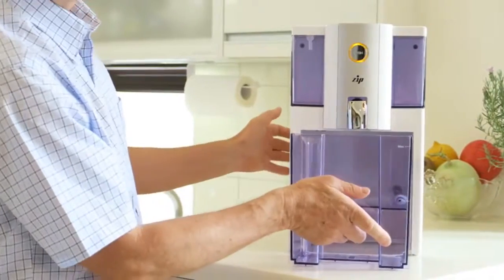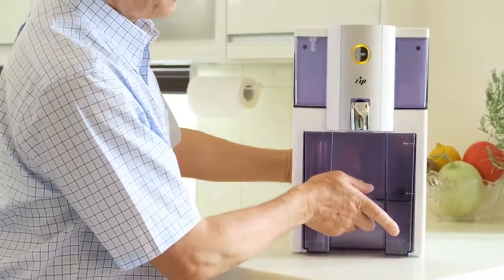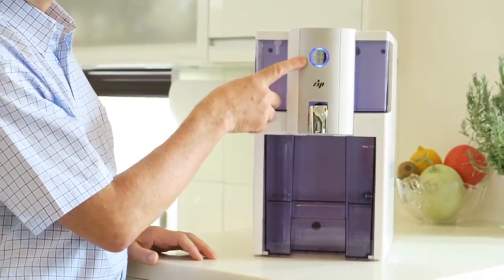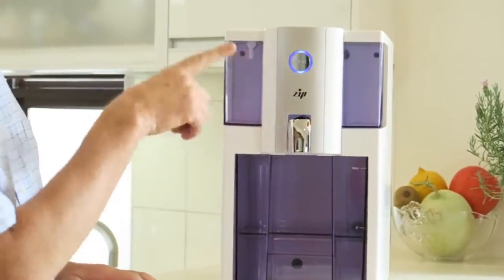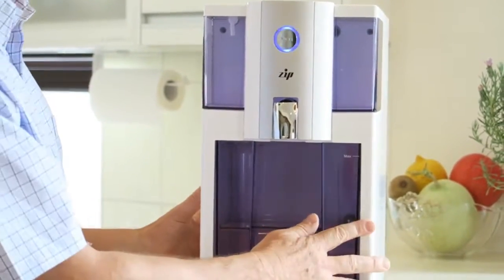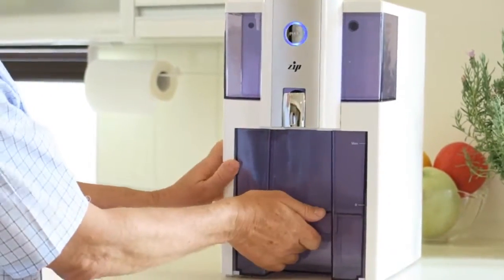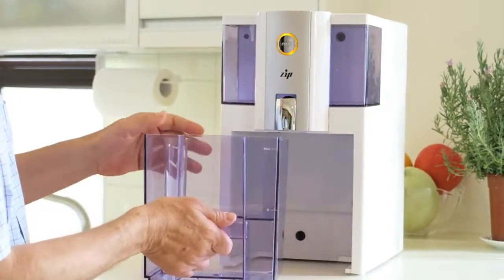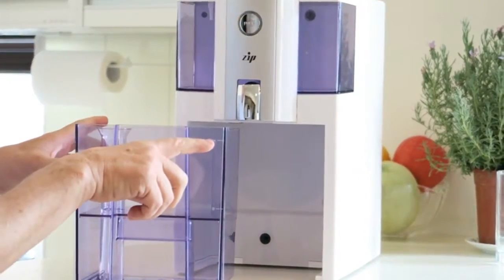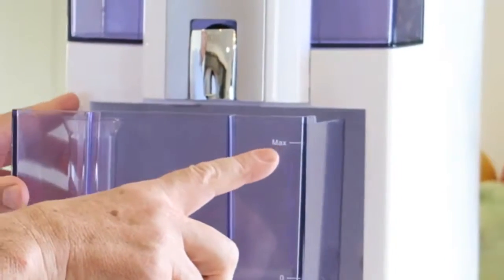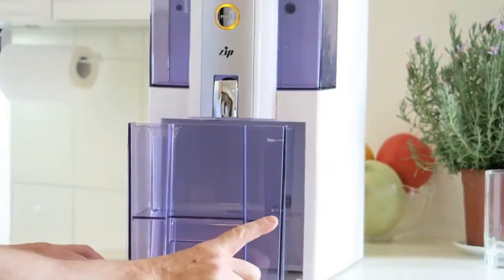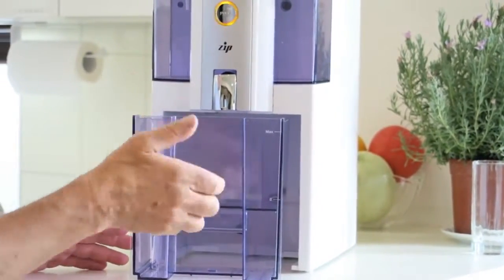Once we have filled the pitcher and we put it back in, the light will turn blue and we will just push the button and then the filtering process will continue. Before we run a batch, a few points about the pitcher: there's a mark here at the top which tells you how full to fill up the pitcher, and when the water level goes down, once it reaches the bottom mark, the filter will automatically stop.